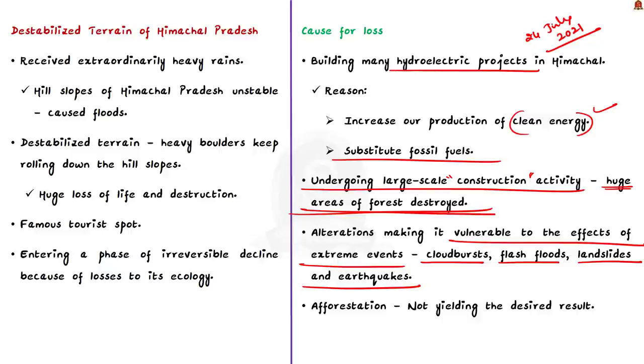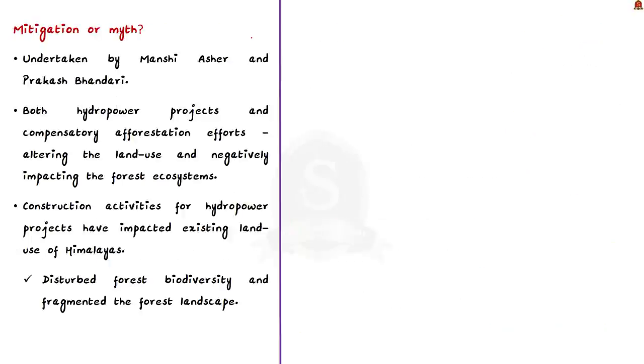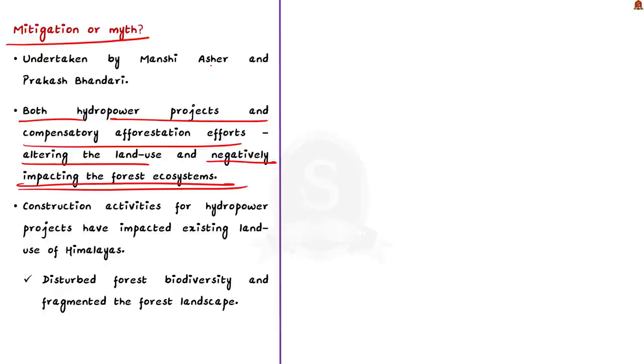Our government is also carrying out afforestation programs to compensate for the loss of forest due to these projects. This is called compensatory afforestation but this is not yielding the desired result. On the contrary it is causing a lot of problems. This has been outlined by a recent study titled Mitigation or Myth. This study noted that both the hydro power projects and compensatory afforestation are altering land use and negatively impacting forest ecosystem in the state. The study was undertaken by environmentalists Manshi Ashar and Prakash Bhandari associated with the Himadara Environment Research and Action Collective.